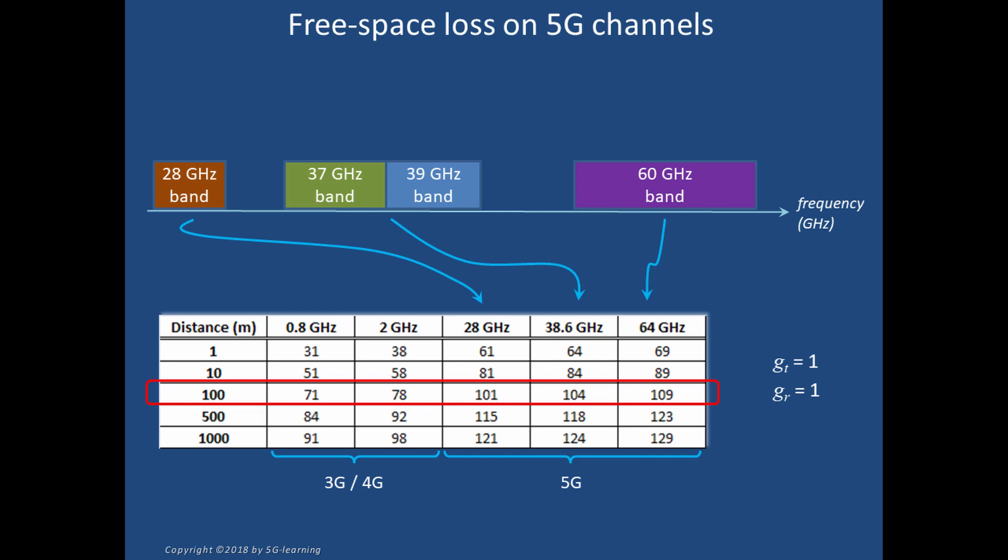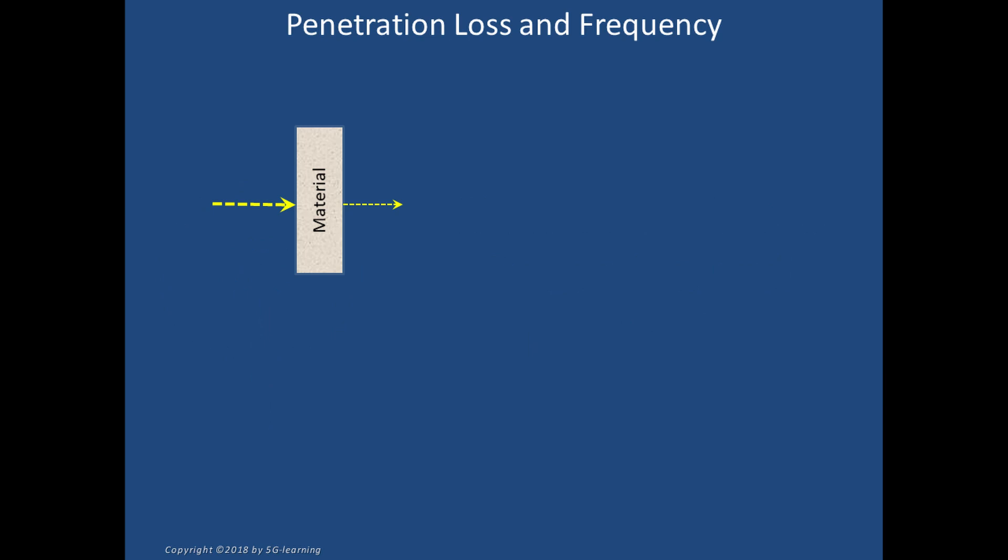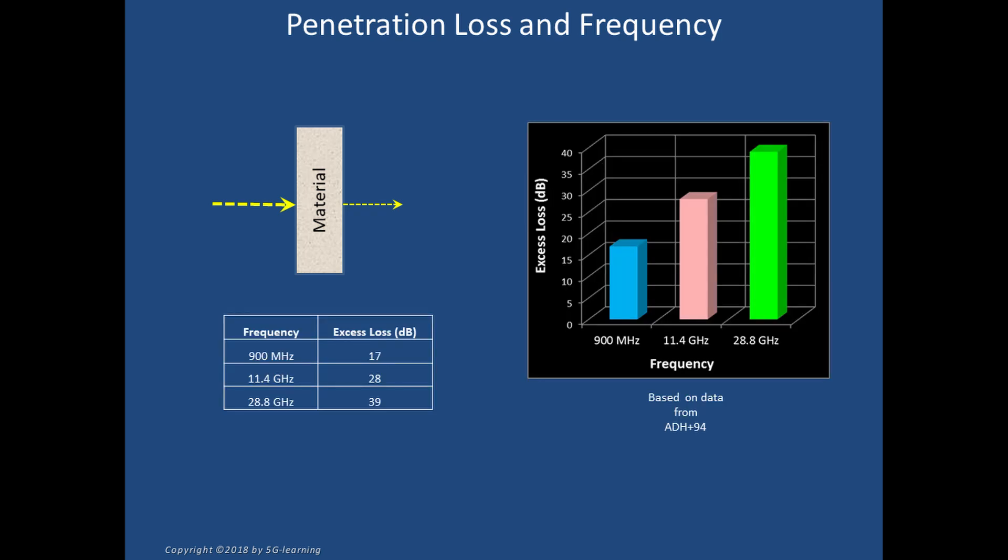Millimeter waves reflection and penetration: We know from daily experience that radio waves are able, at some extent, to penetrate through walls and other obstacles interposed on the way. Inevitably, a part of the energy from the incoming wave is reflected or consumed as heat in the obstacle.